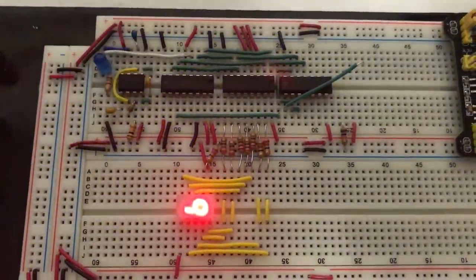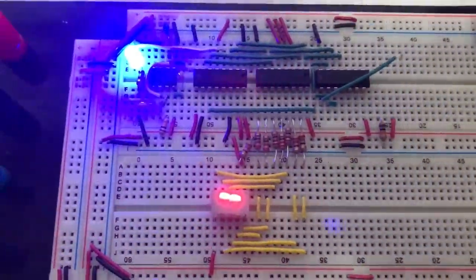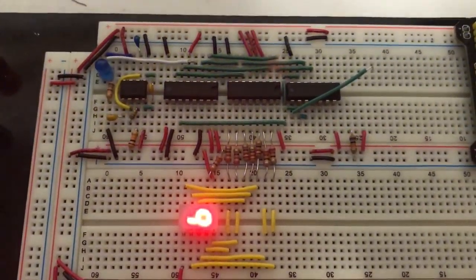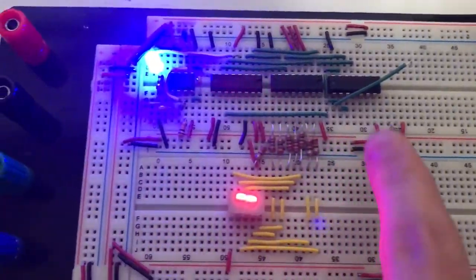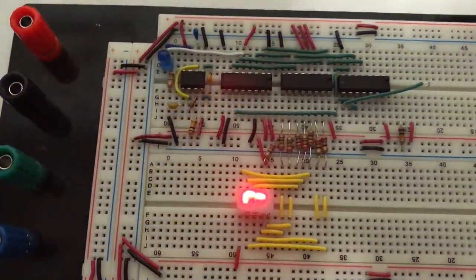So this is my 7-segment display lab counter, and it has two different modes. It can count from 0 to 9 as a decade counter, and it can count from 9 to 0 as a downwards decade counter, using the counter, the decoder, some extra logic, and the 7-segment display.